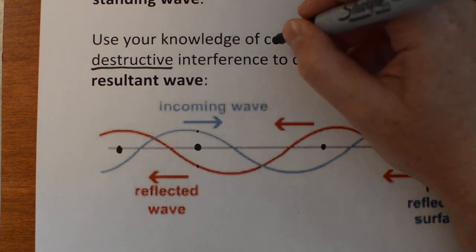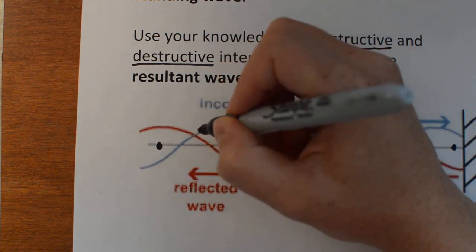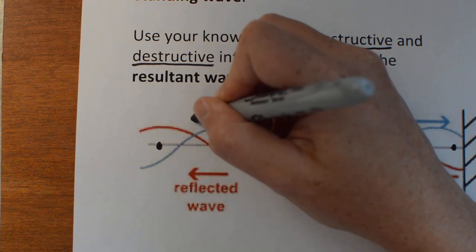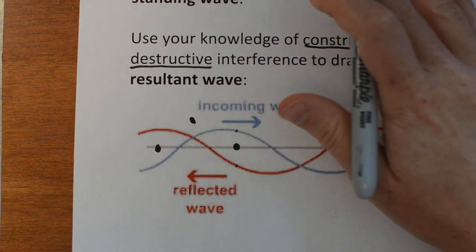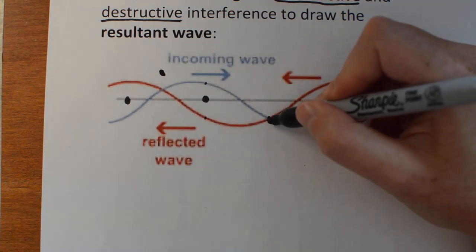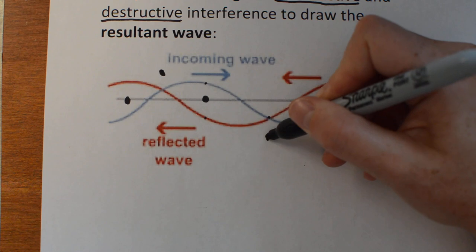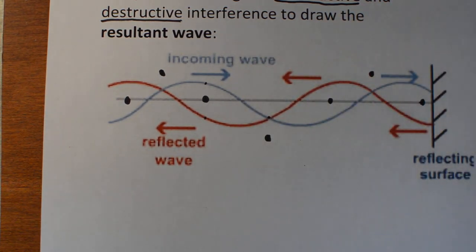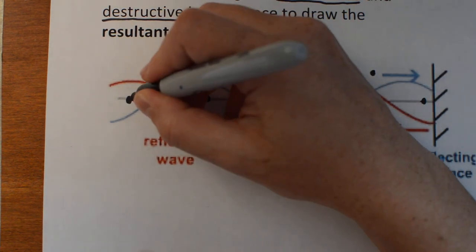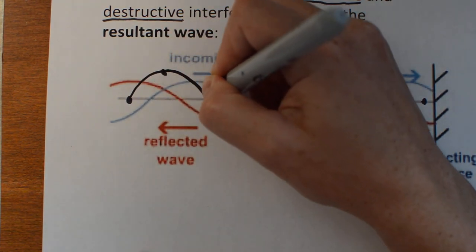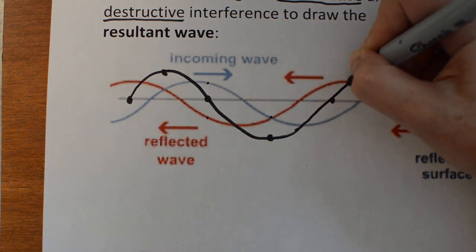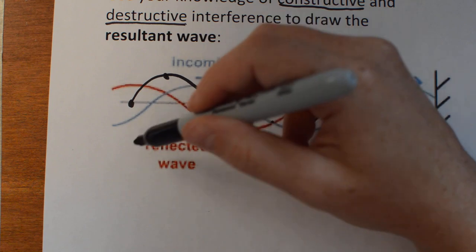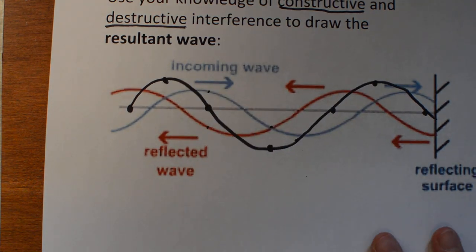There are also places where you see constructive interference. Say right here, both the incoming and the reflected wave are above equilibrium, so they're going to add on top of each other and make an even taller wave. Or here they're both below equilibrium, so they'll add on top of each other negatively and make an even deeper trough. Those are constructive interference spots.